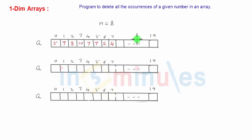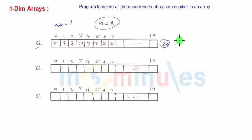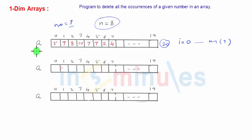We'll define an original array 'a' of size 20, then input the number of elements to process. Let's take n = 8. We'll input a number to be deleted — let's say 7. Using a variable i and a for loop, we'll start moving through the array from index 0 up to n minus 1 (that is, index 7) and check whether the given number is found or not.